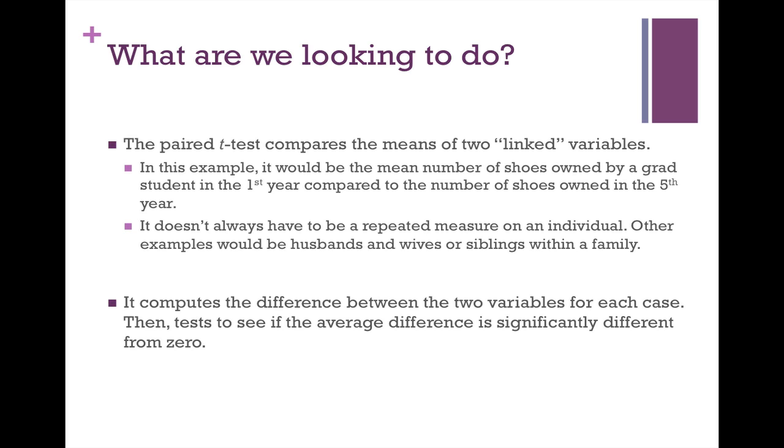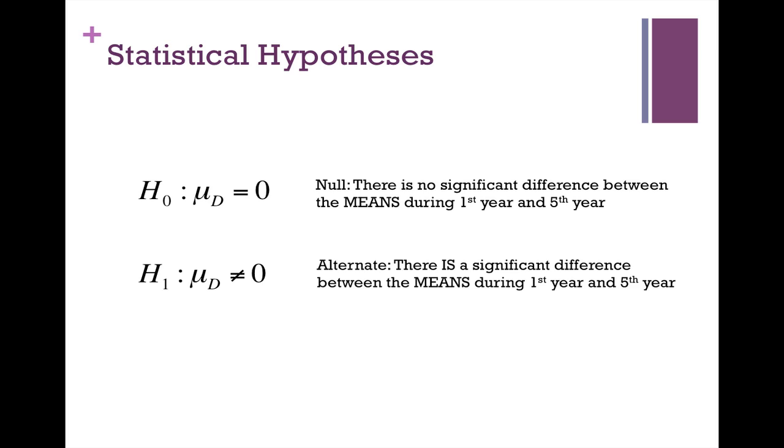So let's take a look at what the statistical hypotheses look like. What you have is the null hypothesis, which is that the mu d, which is the difference, there is no significant difference between the means during the first year and the fifth year. Versus the alternate or research hypothesis, that mu d does not equal zero, so that there is a significant difference between the means during the first and fifth year. This is what you would write out if you were to write out your statistical hypotheses.